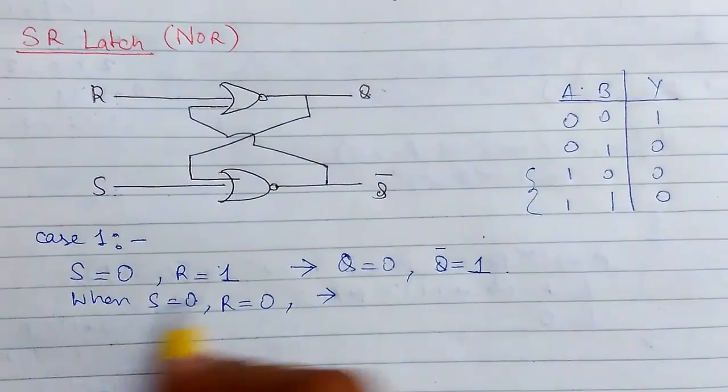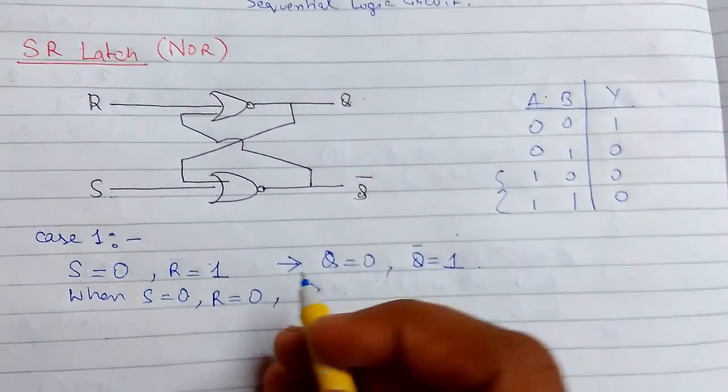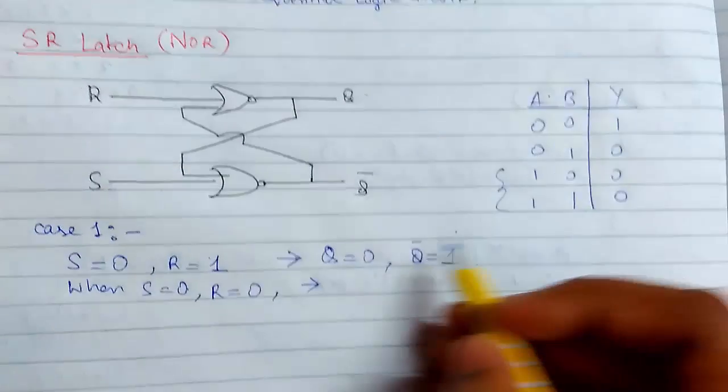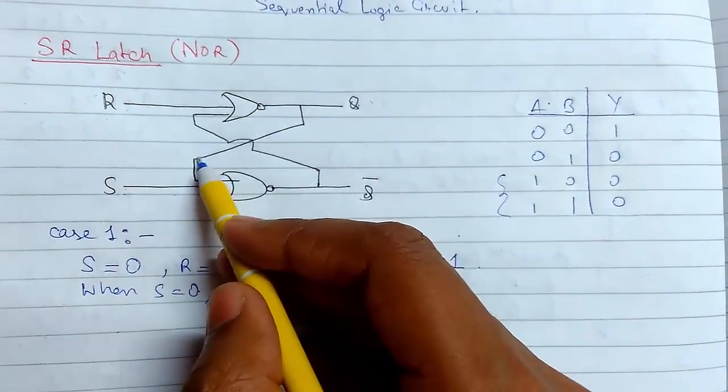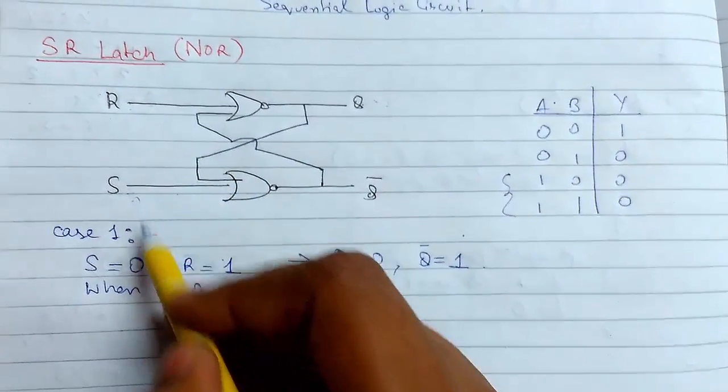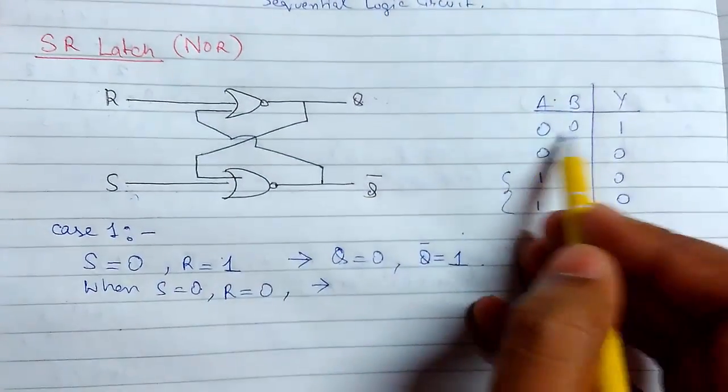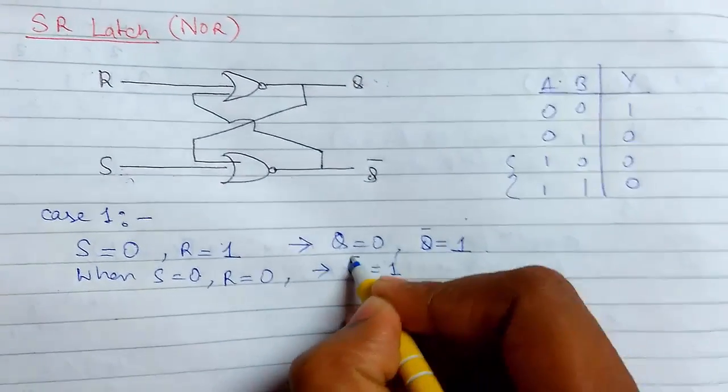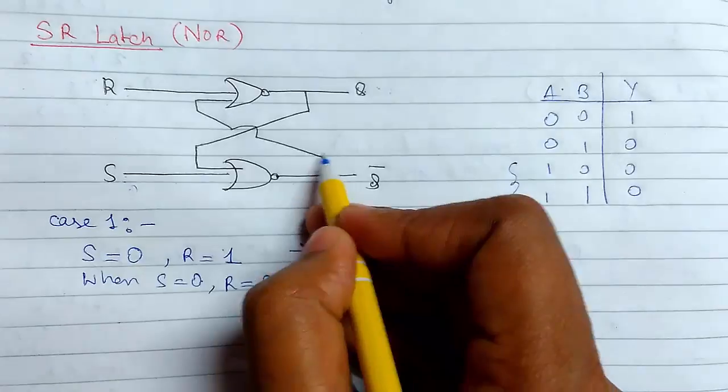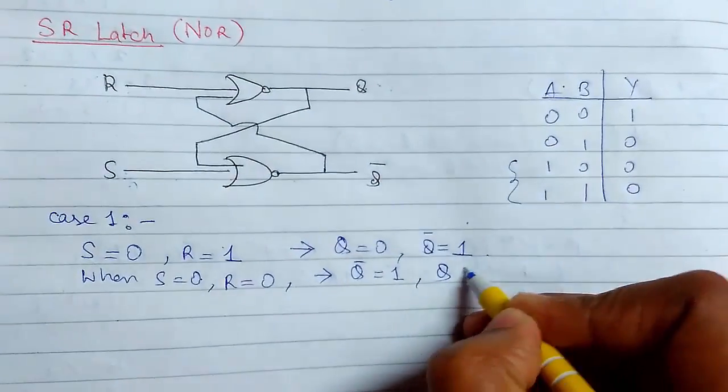Now we have removed the inputs and we will see what will be the new value for it. So our Q was, previously our Q was 0, so 0 here, 0 passed here and S is also 0. So 0, 0 is 1. So we see that Q bar is 1 and Q will be this 1 passed here, 0, 1 is 0.